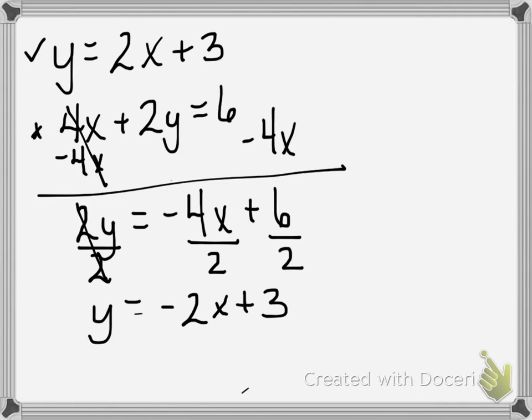Now we have two equations where y is equal to something, so we can graph them. They're both in slope-intercept form. Looking at this one here first, I'm going to go up 1, 2, 3, and put my dot on the y-axis at 3. That's what this point tells me. The y-intercept is 3.